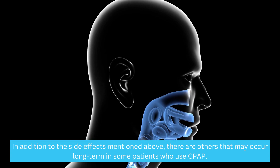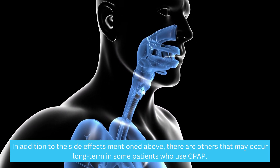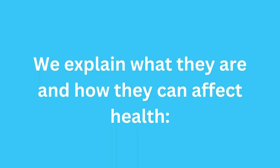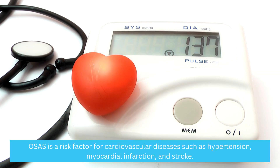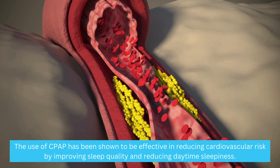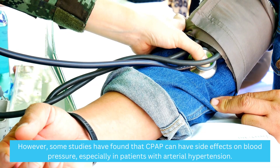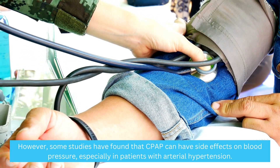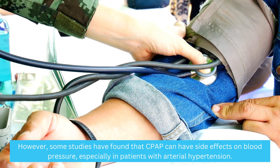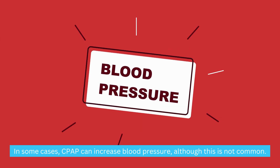In addition to the side effects mentioned above, there are others that may occur long-term in some patients who use CPAP. Below, we explain what they are and how they can affect health. Blood pressure: OSAS is a risk factor for cardiovascular diseases such as hypertension, myocardial infarction, and stroke. The use of CPAP has been shown to be effective in reducing cardiovascular risk by improving sleep quality and reducing daytime sleepiness. However, some studies have found that CPAP can have side effects on blood pressure, especially in patients with arterial hypertension. In some cases, CPAP can increase blood pressure, although this is not common.